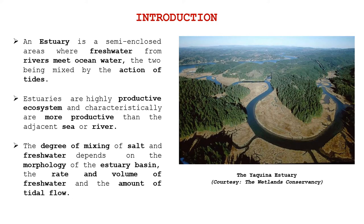In this introductory slide, you can see the diagram. Here an estuary is a semi-enclosed area. These are semi-enclosed areas where fresh water from rivers meets ocean water, and these two waters are mixed together by the action of tides. Estuaries are highly productive ecosystems and characteristically are more productive than the adjacent sea or river.